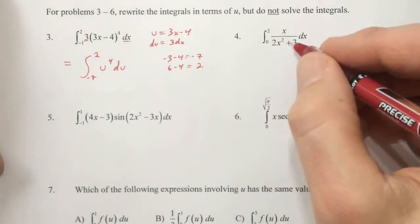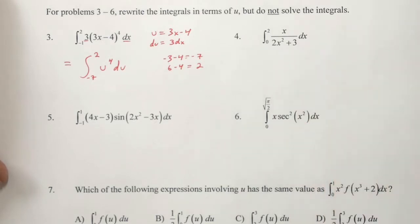For number 4, when we're looking at fractions, the rational expressions, u tends to be the inner function of the denominator: 2x squared plus 3. The derivative of that is 4x dx.